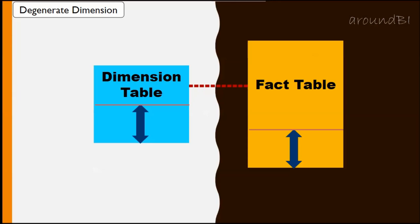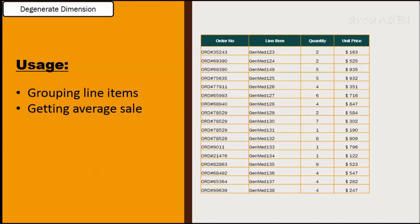We can encounter more than one degenerate dimension in a fact table. Degenerate dimensions are not useless. They are quite normal and useful in data warehouses. The degenerate key can be used to group line items on a single order or to get the average number of line items for an order.